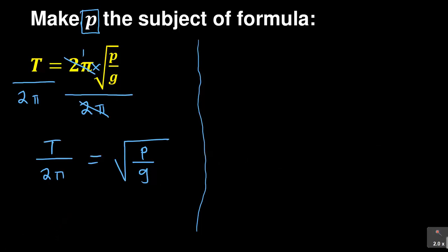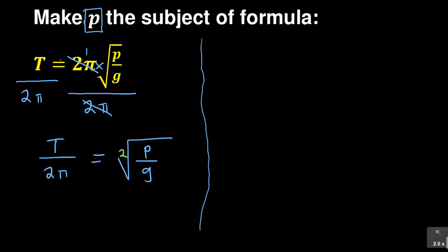In our question there is a hidden two. So what we are having when we simplify is: t over two pi equals the bracket (p over g) to the power of one over two. For me to get rid of that power one over two, I need to multiply by its inverse, which is two over one. What I do on the left I must do on the right, so I put a bracket on the left side.